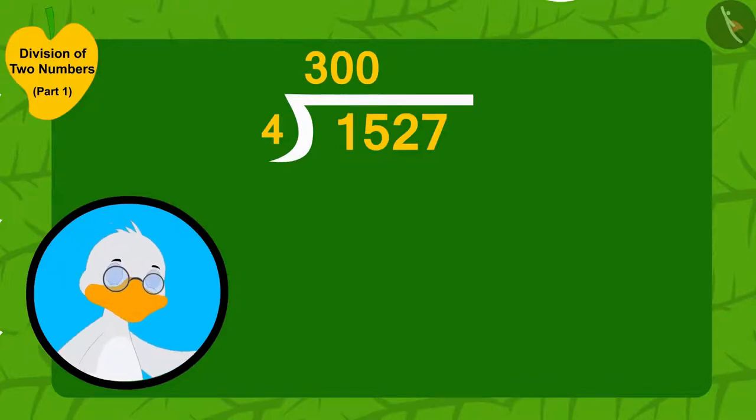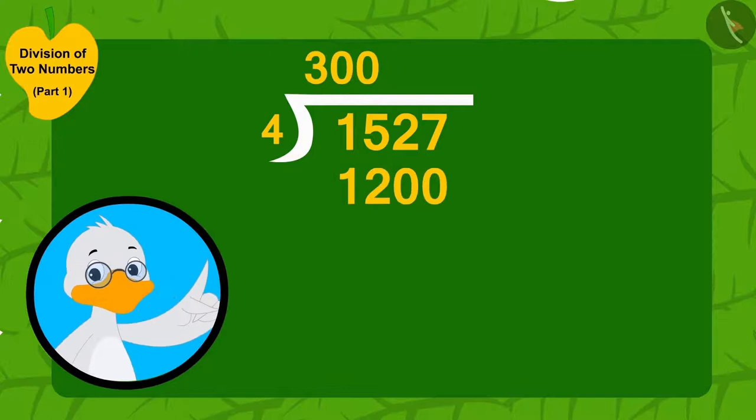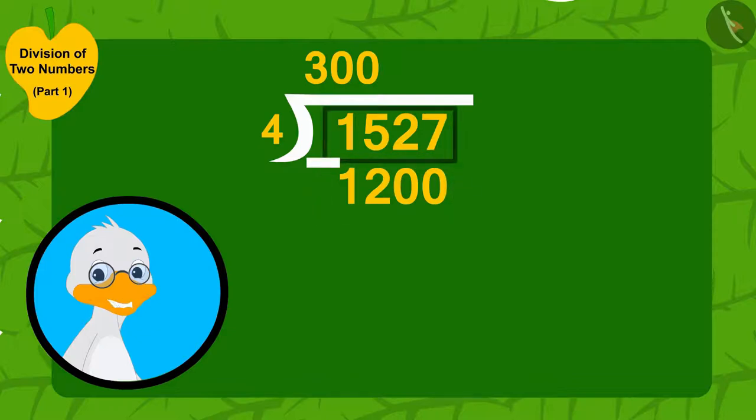And here he wrote one thousand two hundred. To find the number of mangoes that are left, I would subtract one thousand two hundred from one thousand five hundred and twenty-seven.